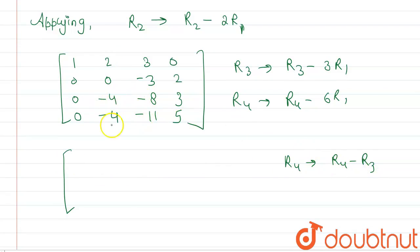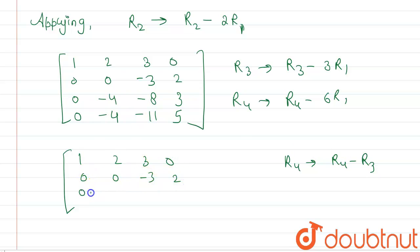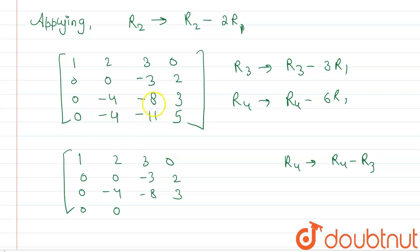Now applying R4 → R4 - R3: we subtract row 3 from row 4. The matrix now has rows [1, 2, 3, 0], [0, 0, -3, 2], [0, -4, -8, 3], and [0, 0, -3, 2]. Subtracting: 0-0=0, -11-(-8)= -3, and 5-3=2, giving row 4 as [0, 0, -3, 2].